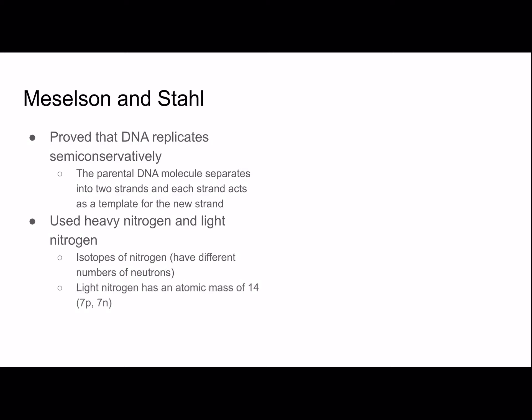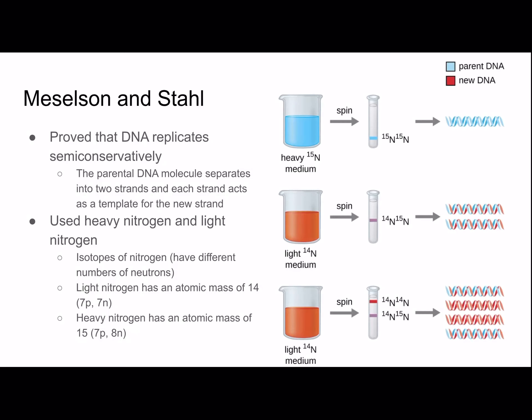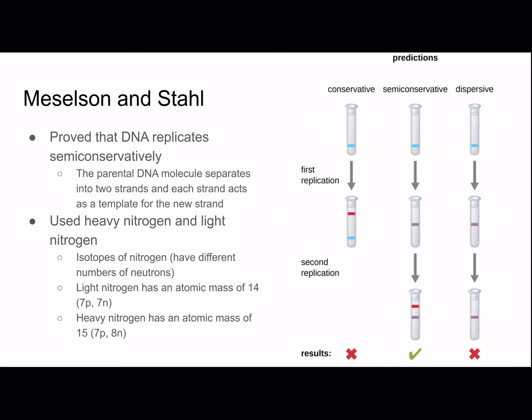Light nitrogen has an atomic mass of 14 — seven protons, seven neutrons. Heavy nitrogen has an atomic mass of 15 — seven protons, eight neutrons. Heavy nitrogen goes to the bottom of the test tube, light nitrogen to the top, and a mix goes to the middle. This is how they determined how much of each type of nitrogen was in the new strands. The semi-conservative model was the correct one, as strands had a mix of heavy and light nitrogen.